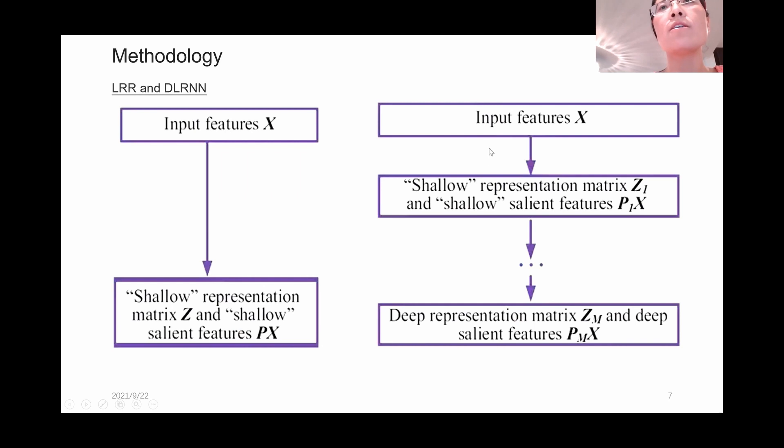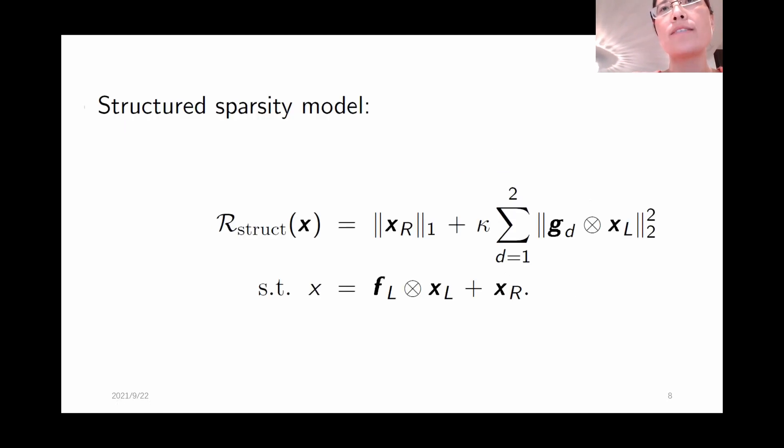But here we plan to fill in more deep information with the model. We first decompose the features matrix into the shallow representation matrix Z and PX. And then we use the former layers information fused with the current layers information to do classification.